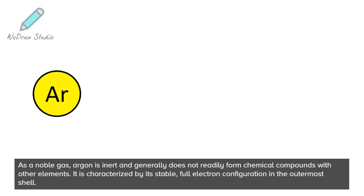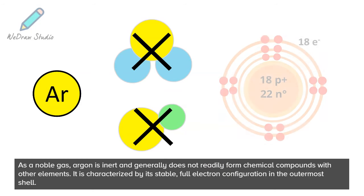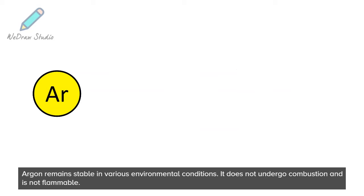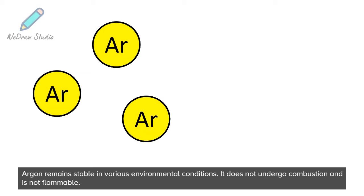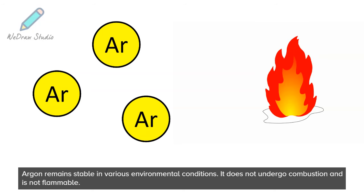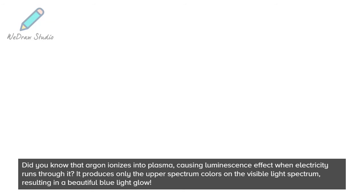As a noble gas, argon is inert and generally does not readily form chemical compounds with other elements. It is characterized by its stable, full electron configuration in the outermost shell. Argon remains stable in various environmental conditions — it does not undergo combustion and is not flammable.